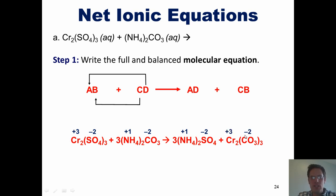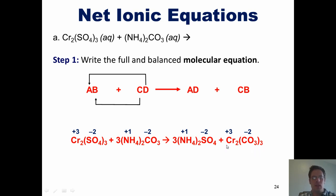It stands to reason that in order to have the charges balance out, I have to have two chromiums — each with a plus 3 charge — bonded together with three carbonates — each with a minus 2 charge — giving an overall negative charge of minus 6 and an overall positive charge of plus 6. The last thing we do is balance the chemical equation by putting coefficients in front of all the species that are necessary.